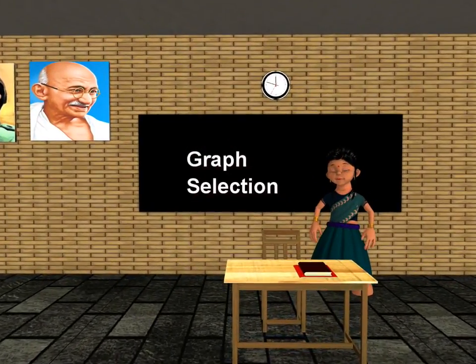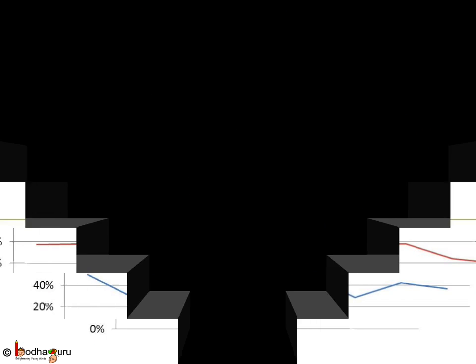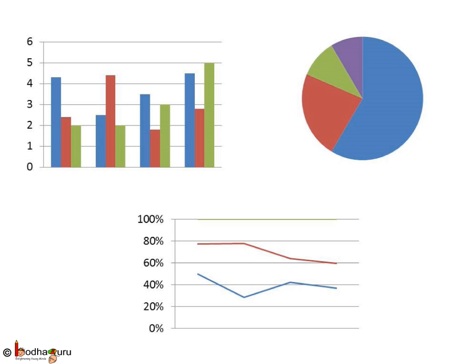Good morning children! Now that we know how to draw different charts and graphs, let us see which graph to use in different cases. We often see different types of graphs or charts in newspapers, magazines, books, and even on TV. There are so many different types of graphs, which means all kinds of data are not the same and cannot be efficiently represented by a single type of graph. Then how do we know which kind of graph is ideal for a certain type of data? Let us see.